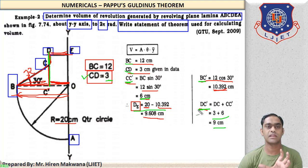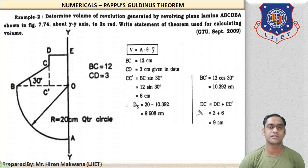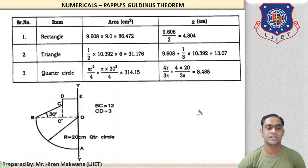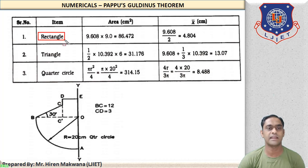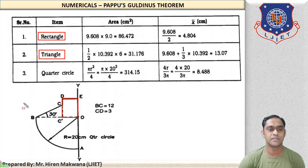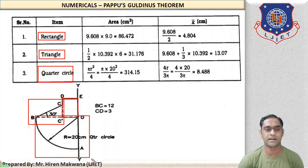Carefully calculate these values. Now let us go ahead and see how the table is formed. The parts are listed: the first part is the rectangle, the second part is the triangle (BCC' portion), and the last part is the quarter circle BOA.